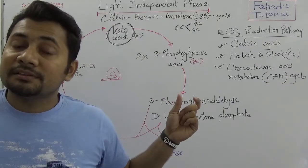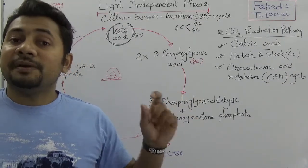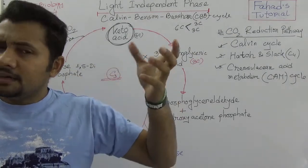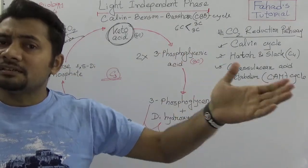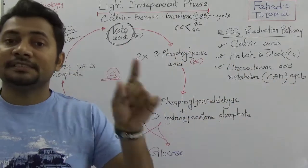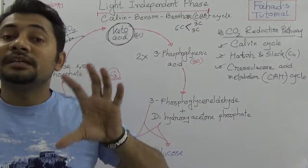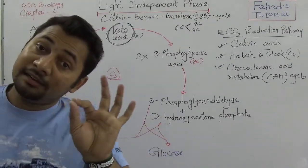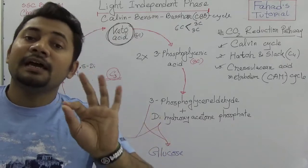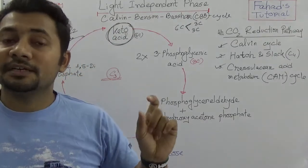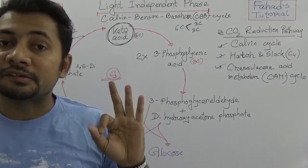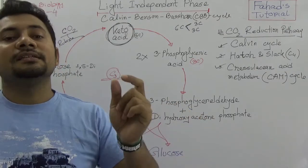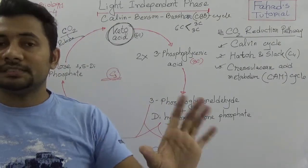This carbon dioxide reduction pathway was discovered by Melvin Calvin, along with Benson and Bassham. The cycle is named after Calvin, and that is why it is called the Calvin cycle. Also, since the first permanent compound is the 3-carbon compound phosphoglyceric acid, it is called the C3 cycle.